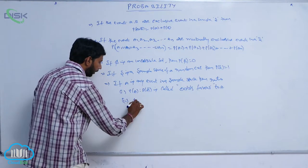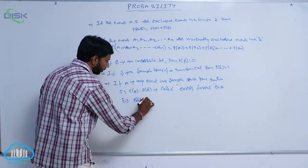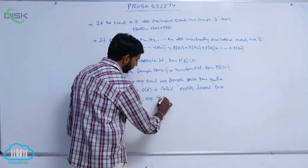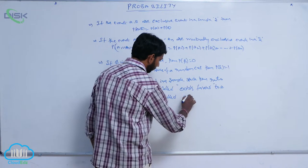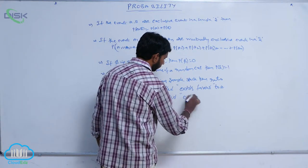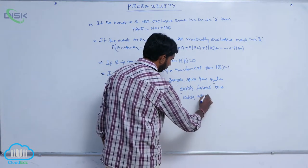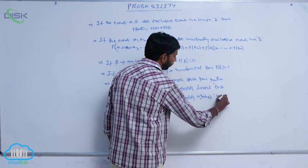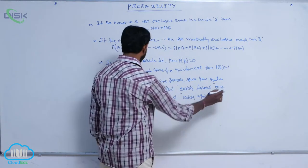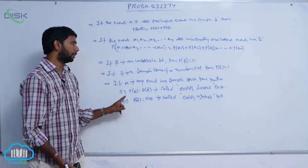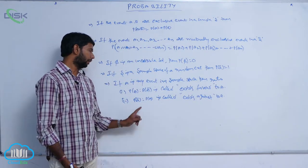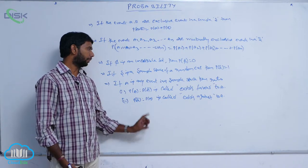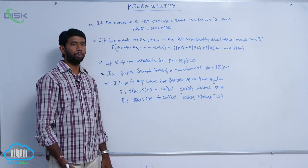And the ratio P(Ā) to P(A) is called odds against A. So to summarize: P(A) to P(Ā) is odds in favor of A, and P(Ā) to P(A) is odds against A.